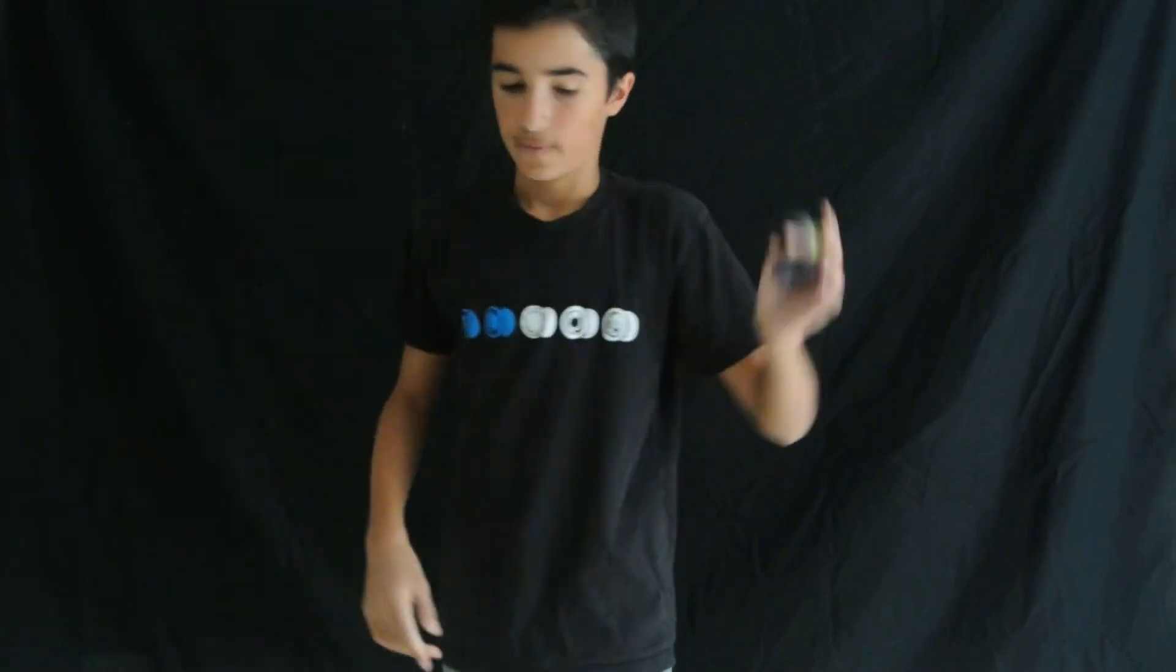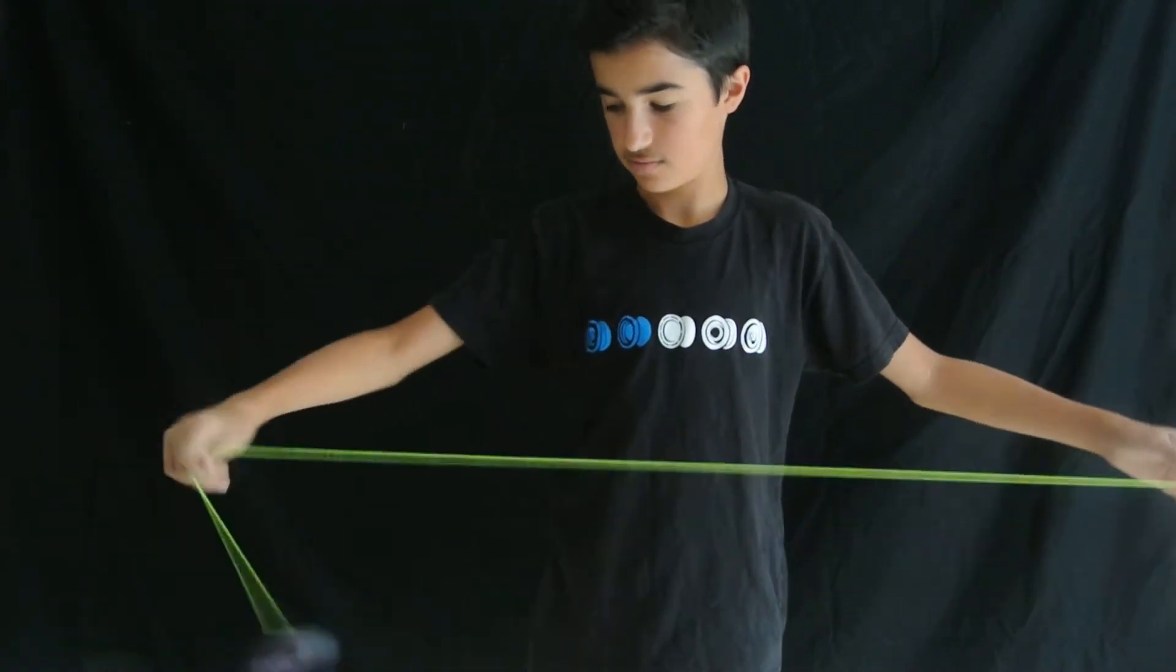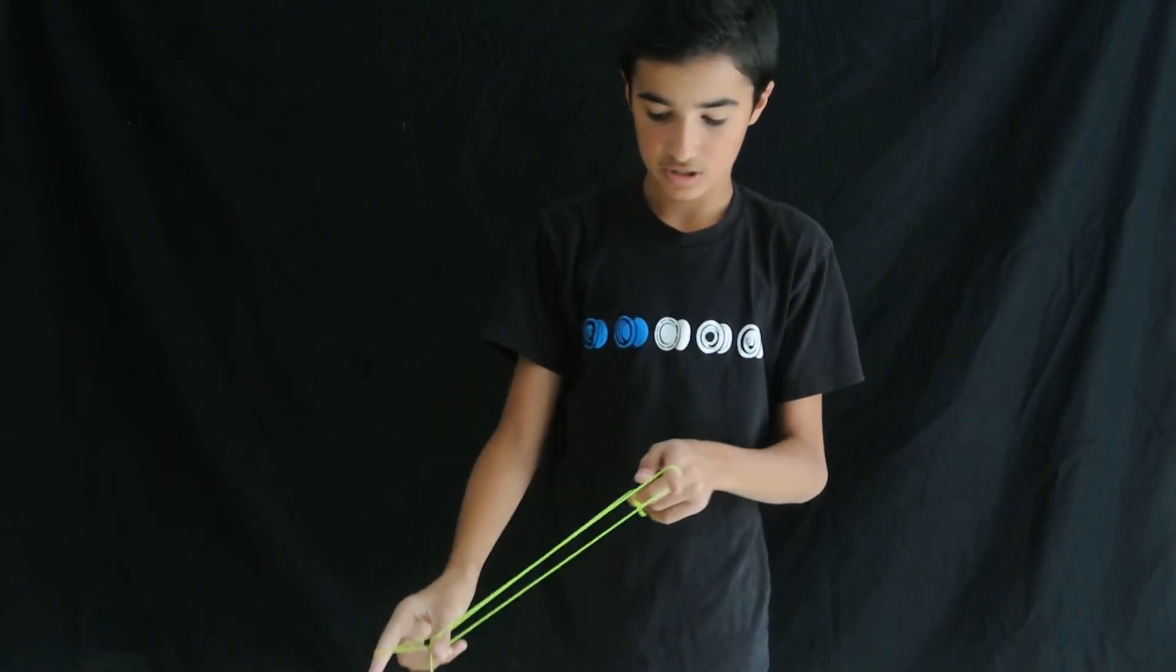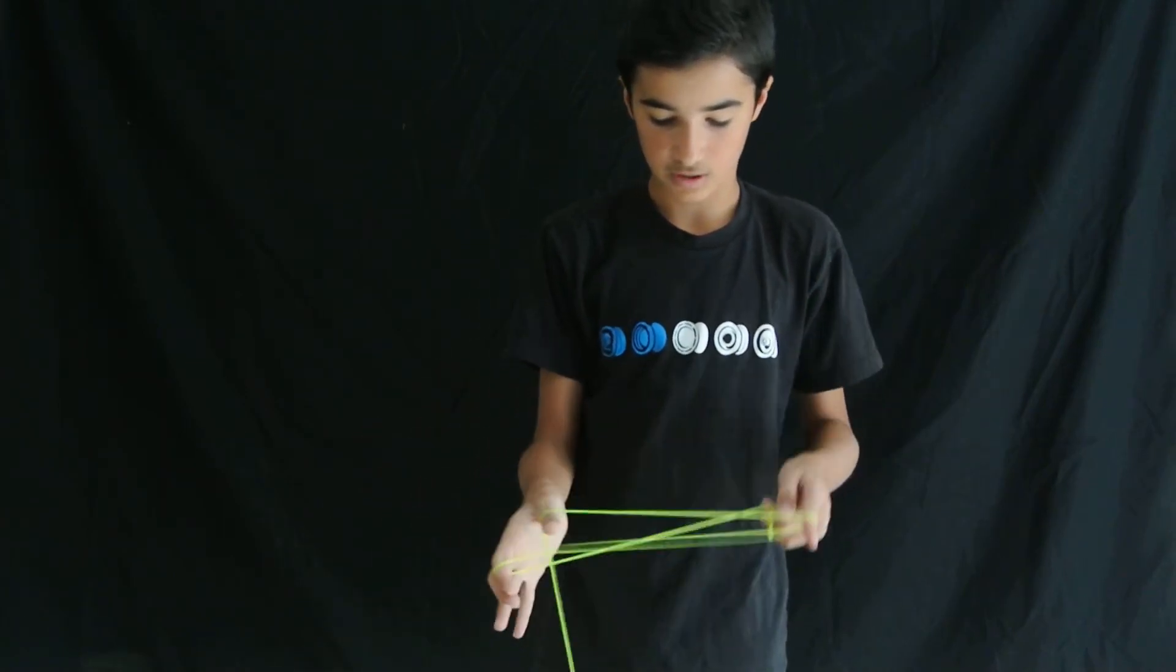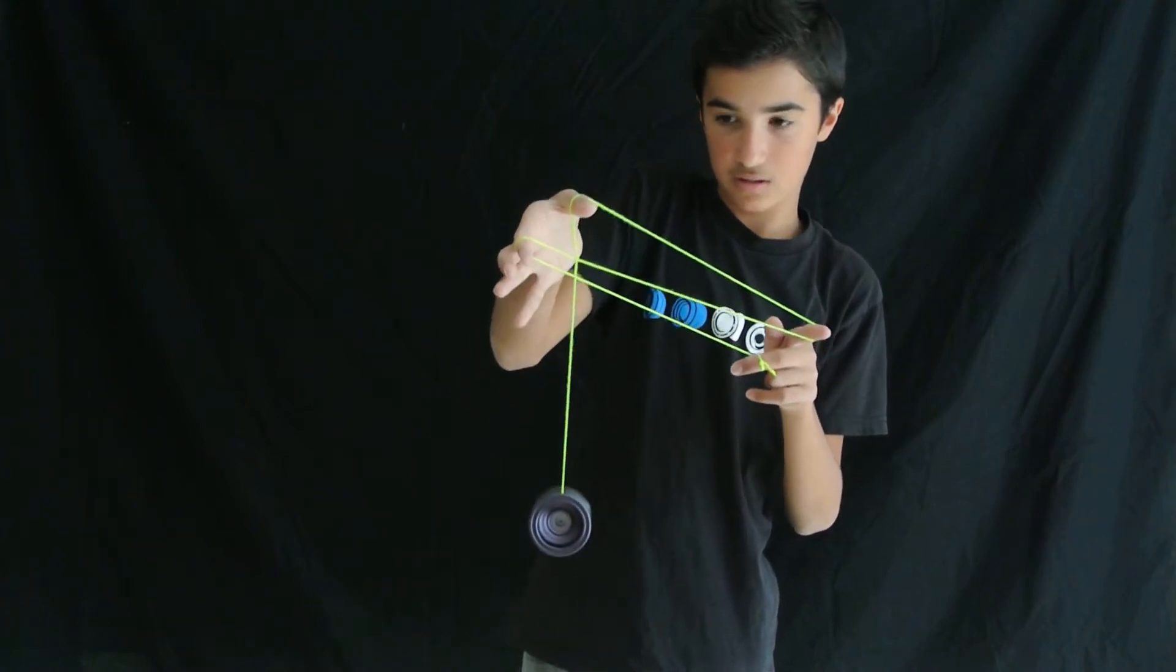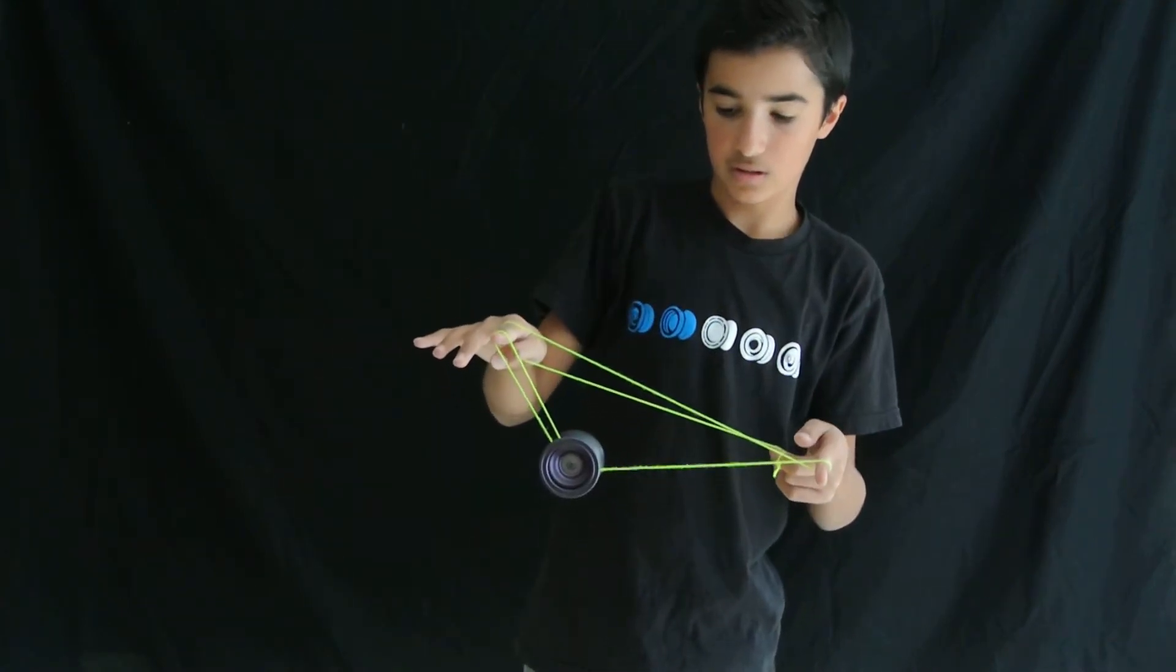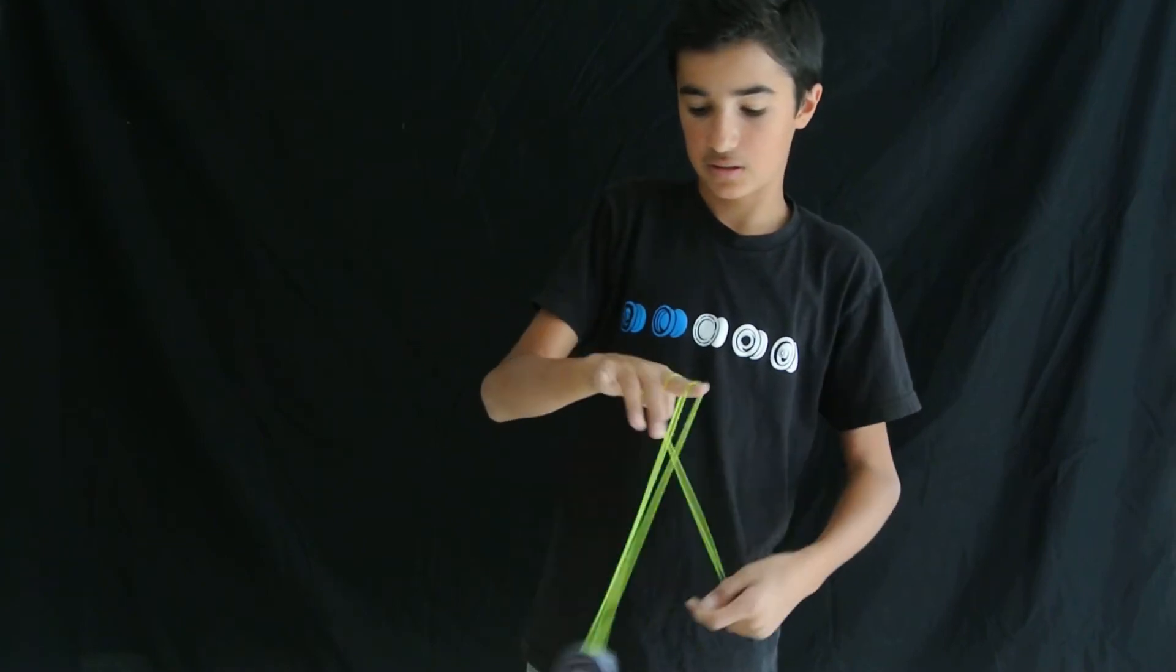And after you pop it off of that front string, you just kind of want to drop your thumb. Because your thumb's going to be around it right here. You're going to drop that and then swing it over onto that front string right there.